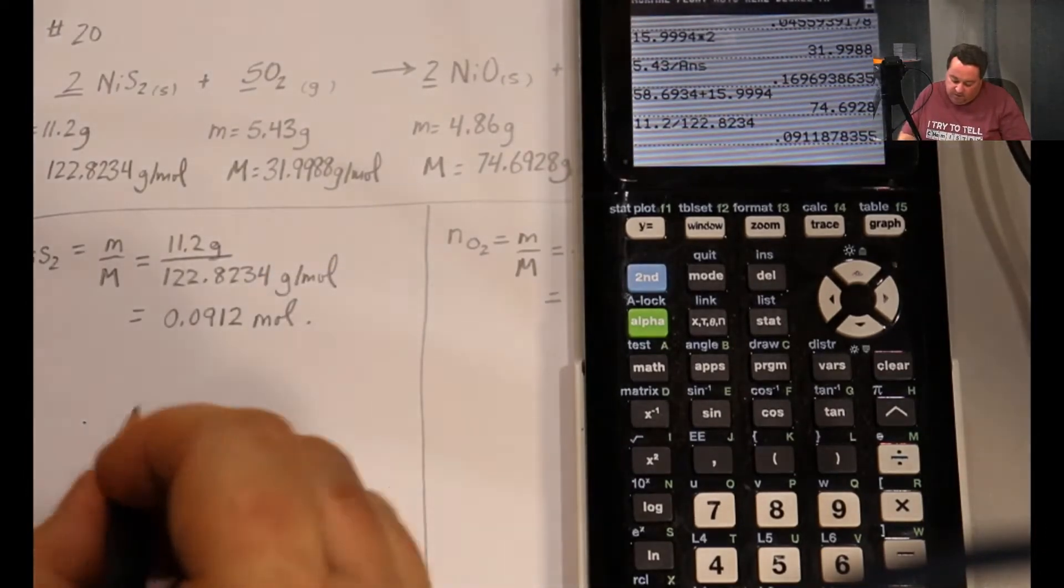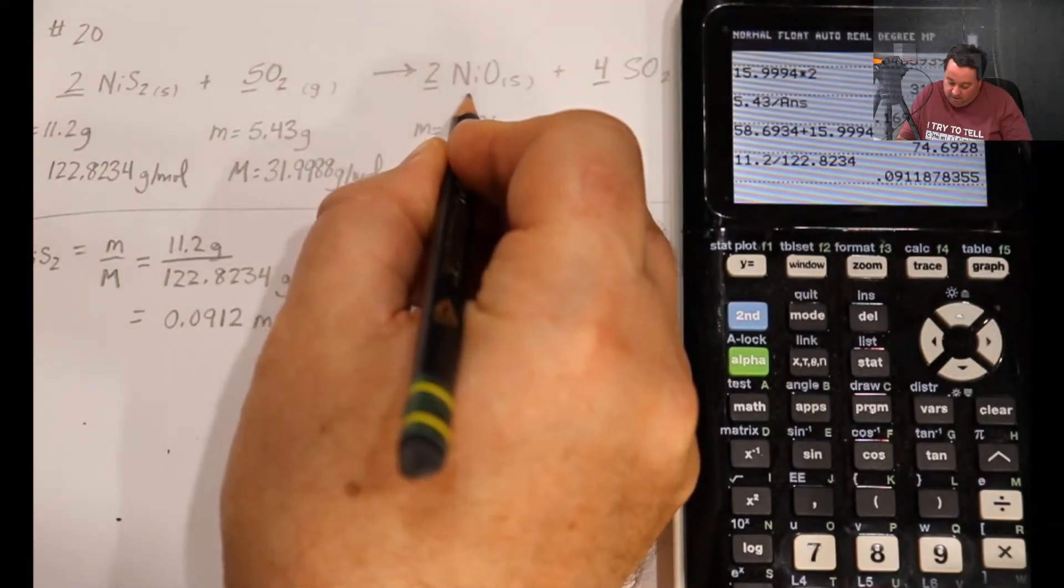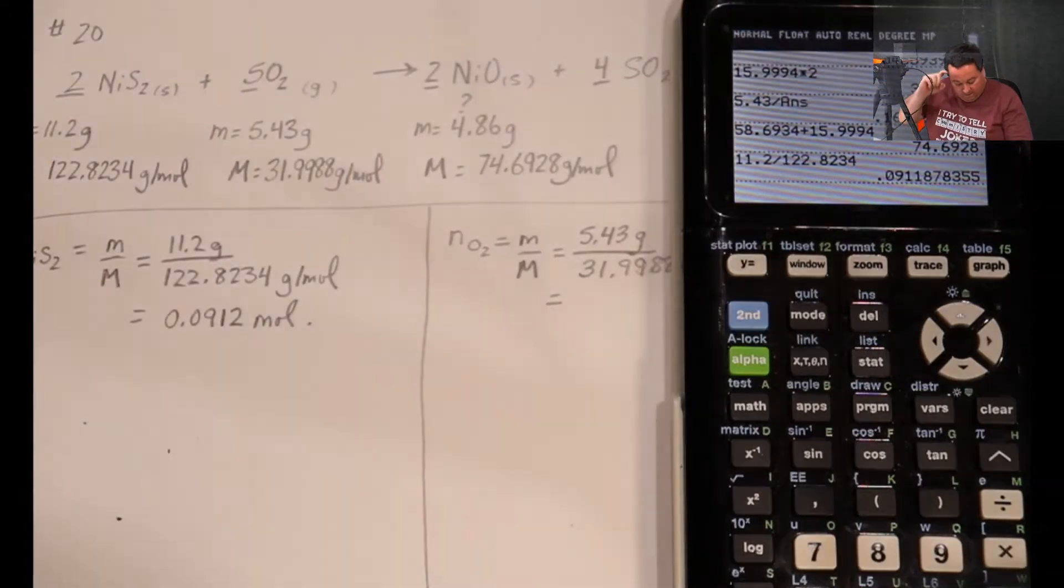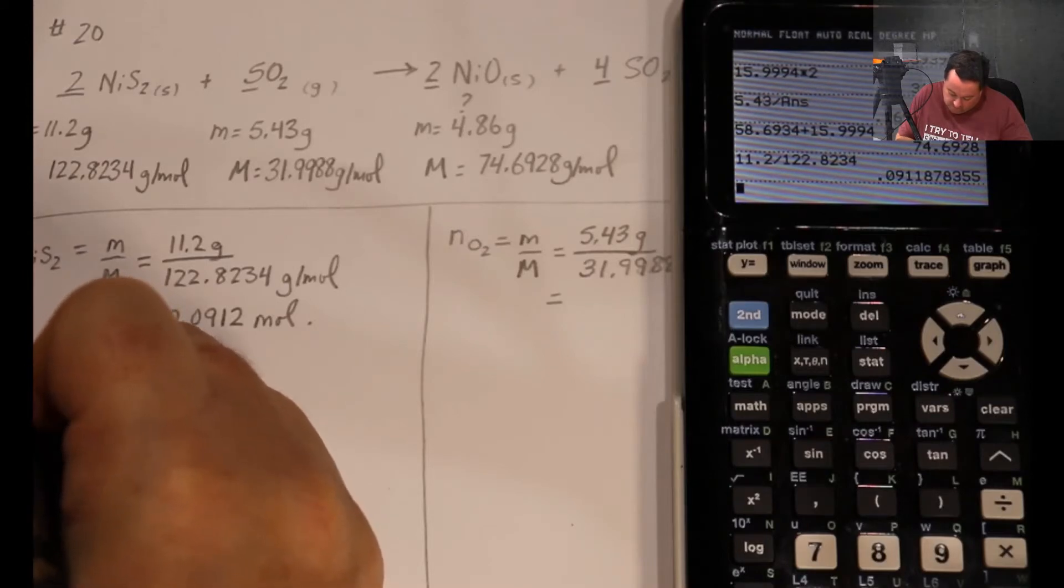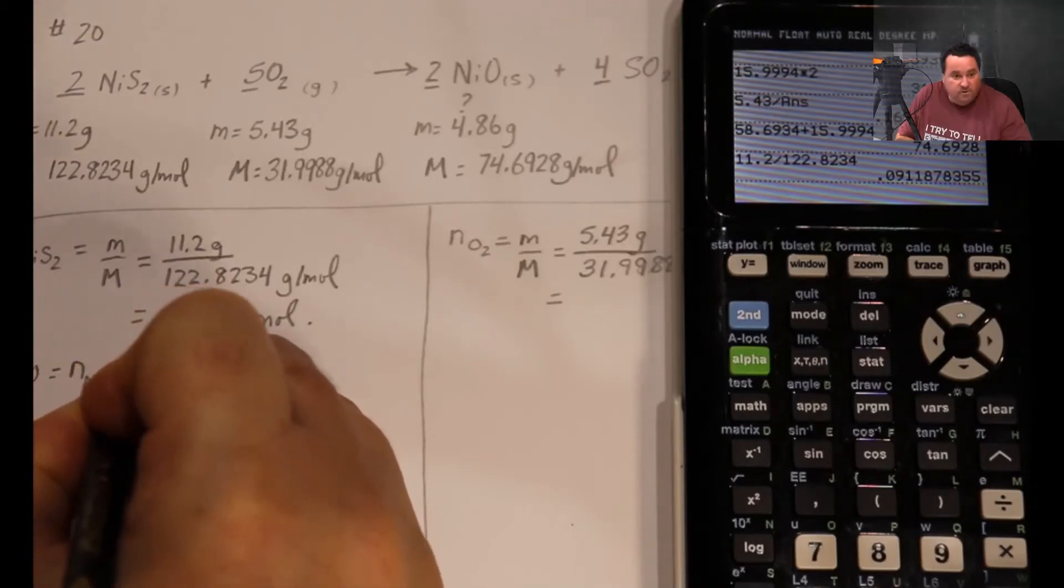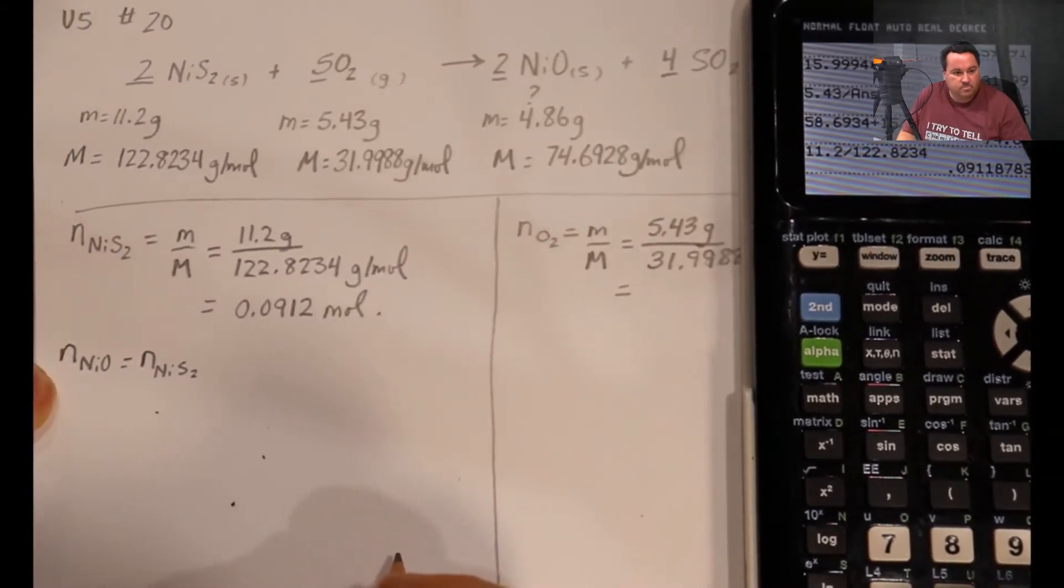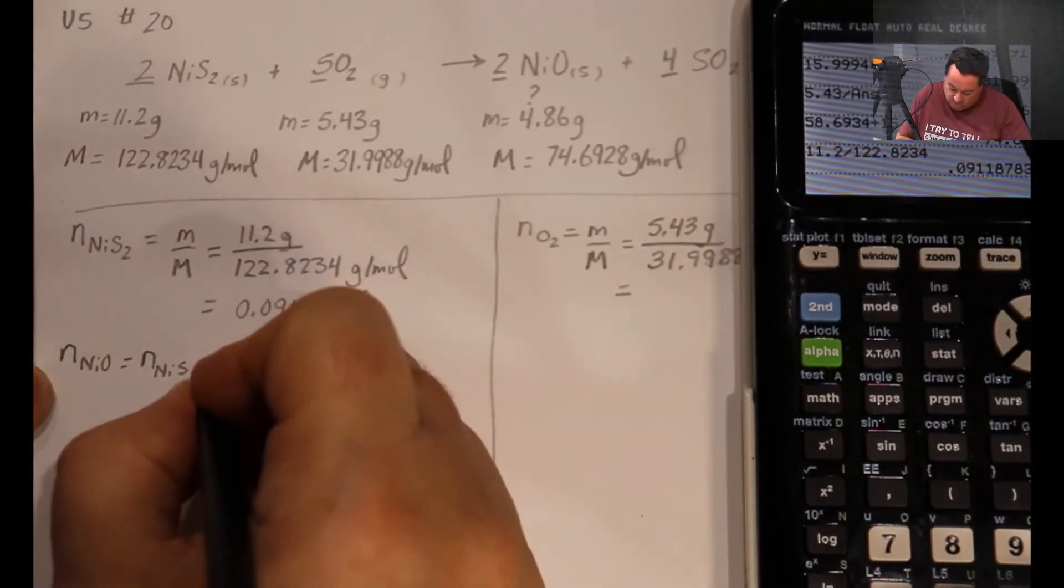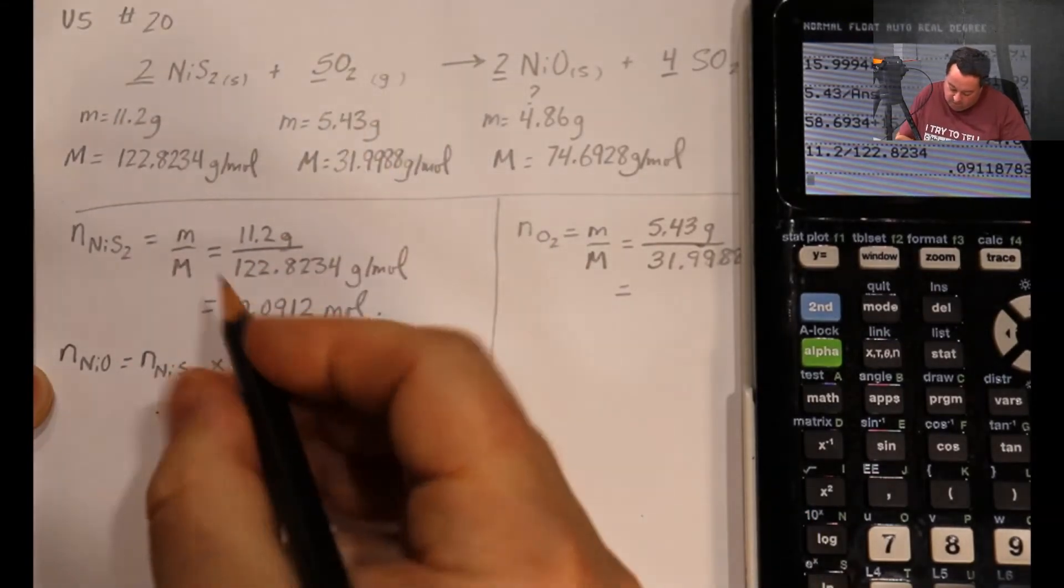So the next thing is to figure out how many moles of our target, our nickel-two-oxide, we can make from this reactant. So the number of moles of NiO is the number of moles of Ni2S3 times the mole ratio, two over two.